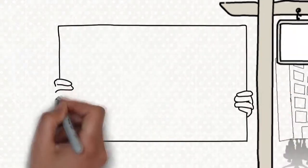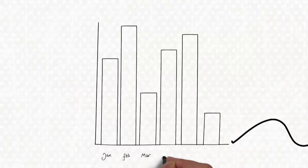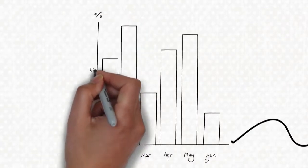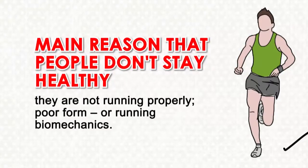The fundamental rule of running is to stay healthy. Running injuries are the number one cause of poor performance among runners of every level. A main reason that people don't stay healthy is that they are not running properly. Poor form or poor running mechanics is the cause.